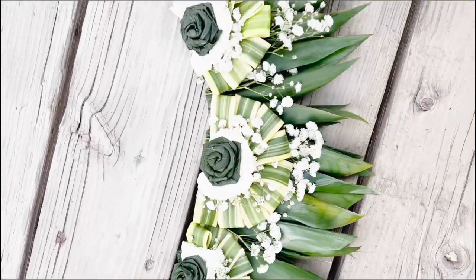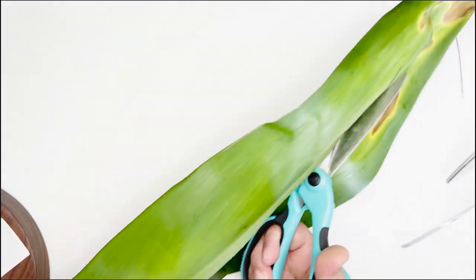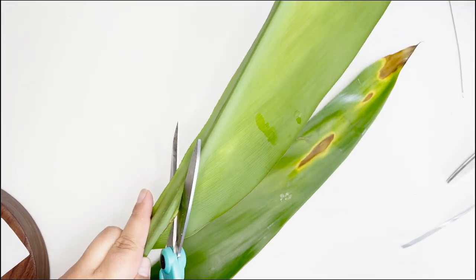First we're gonna prep our tea leaves. I'm gonna remove the center stem of the tea leaf. I'm gonna follow along the center with my scissors and remove both sides.